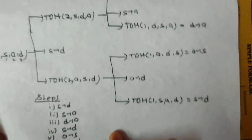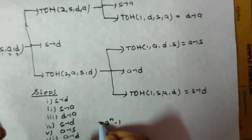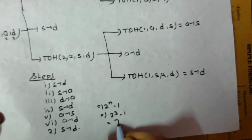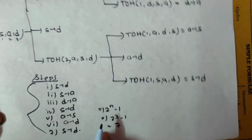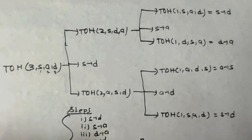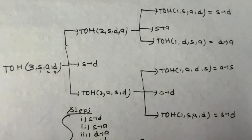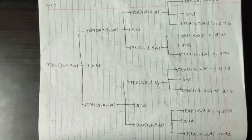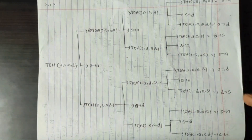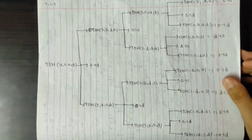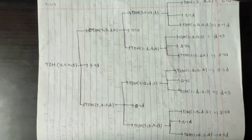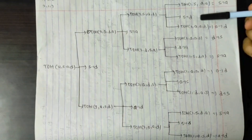The number of steps will always be 2 to the power N minus 1. So 2 to the power 3 minus 1 equals 7 — we have exactly 7 steps. The same technique can be repeated for 4 disks, using the same sequences 1-3-2 and 2-1-3. Here is the complete diagram for 4 disks.